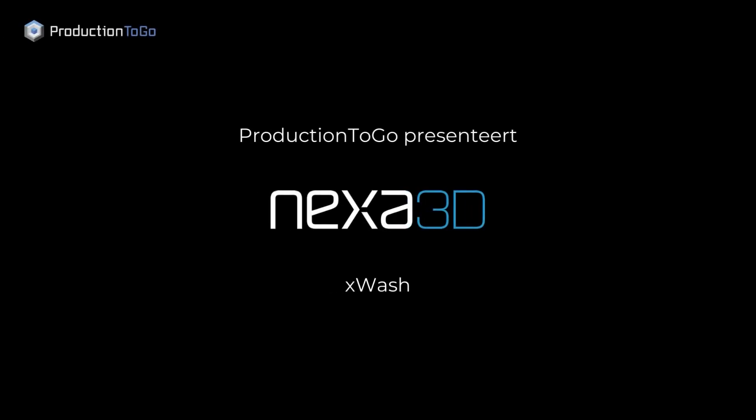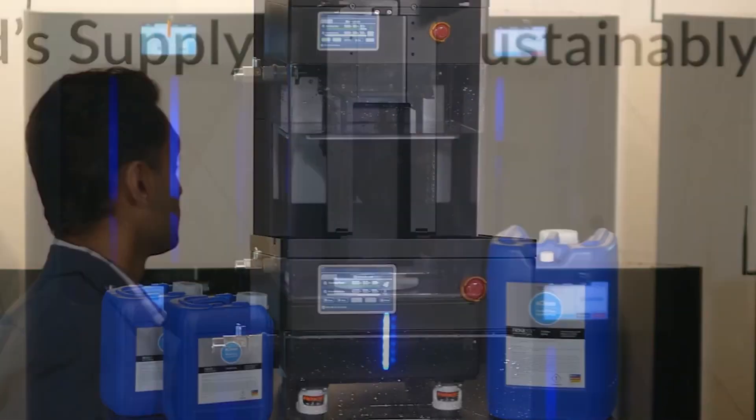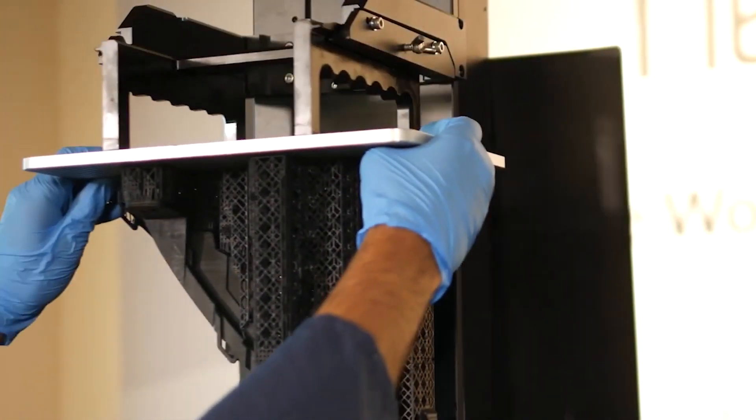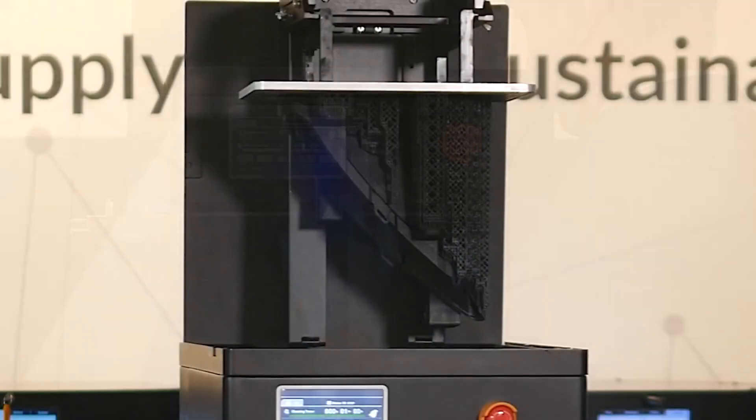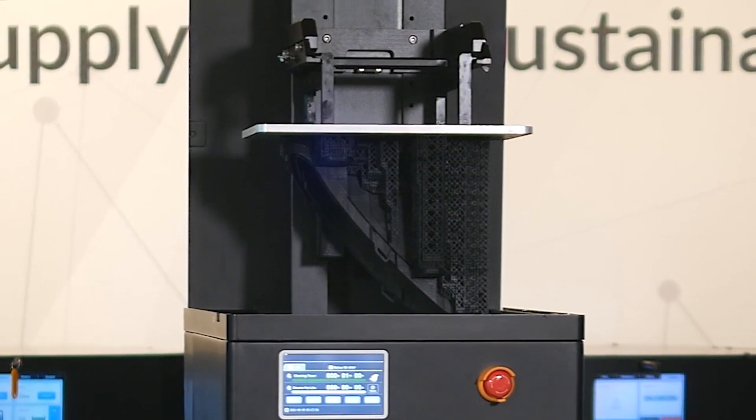Nexa 3D introduces X-Wash, a smart, affordable and sustainable parts washer. X-Wash is a new class of automated washer that works exclusively with Nexa 3D's sustainable X-Clean washing detergent to help manufacturers streamline, optimize and scale their 3D printing and post processing operations.